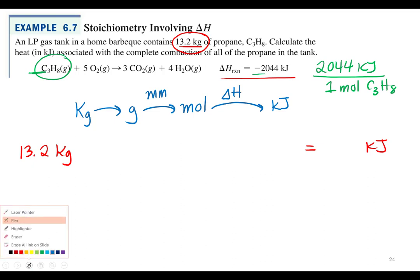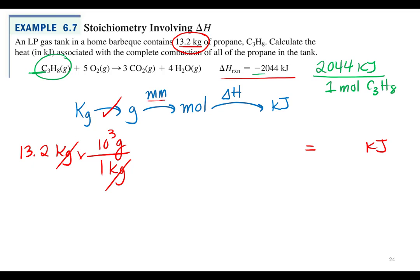We know that there are a thousand grams in one kilogram—that's our first conversion factor. Now we need to calculate the molar mass so that we can go from grams to moles. The molar mass of propane is the sum of three carbons plus eight hydrogens.